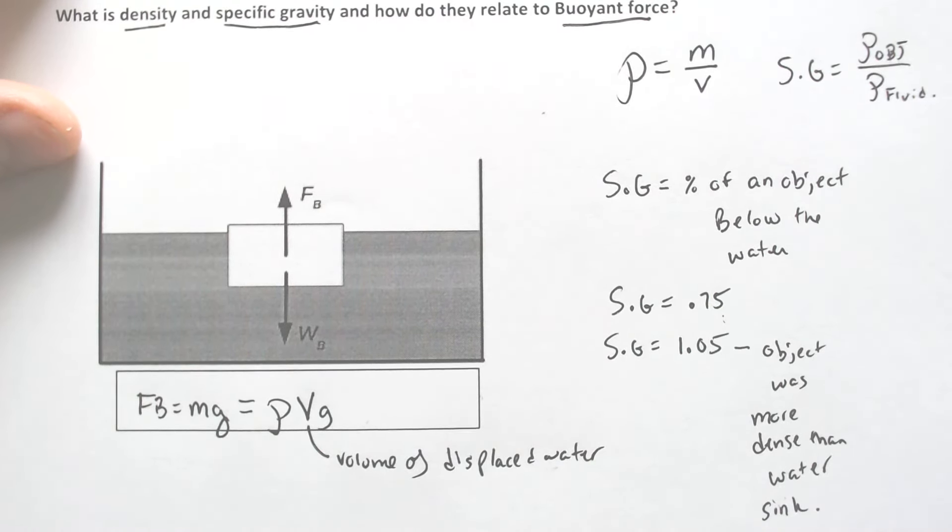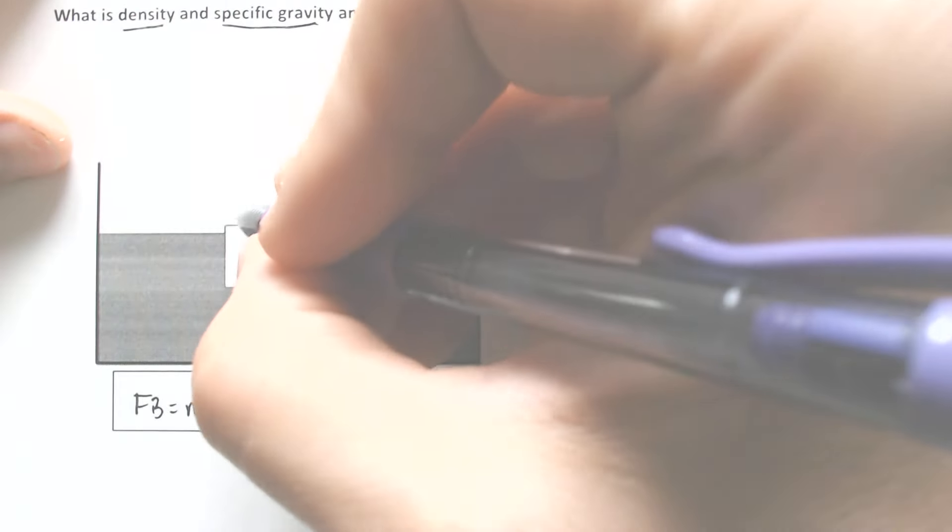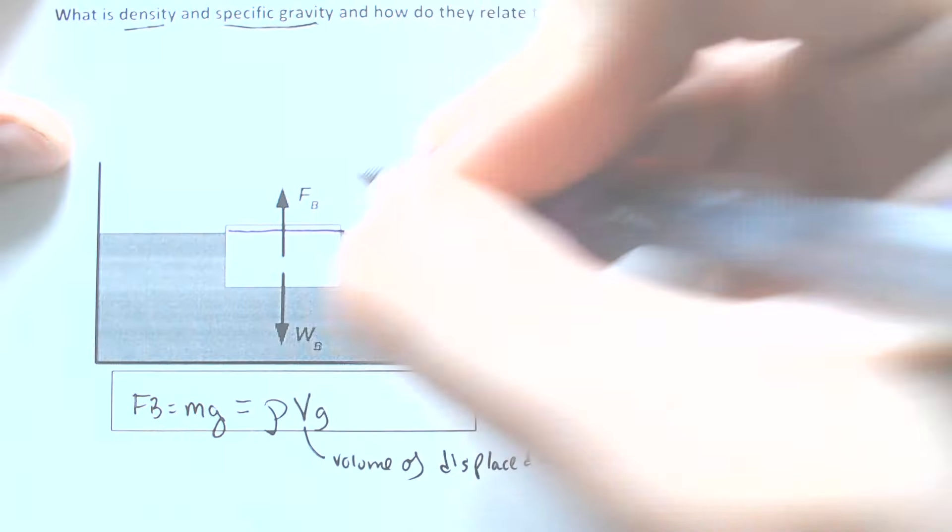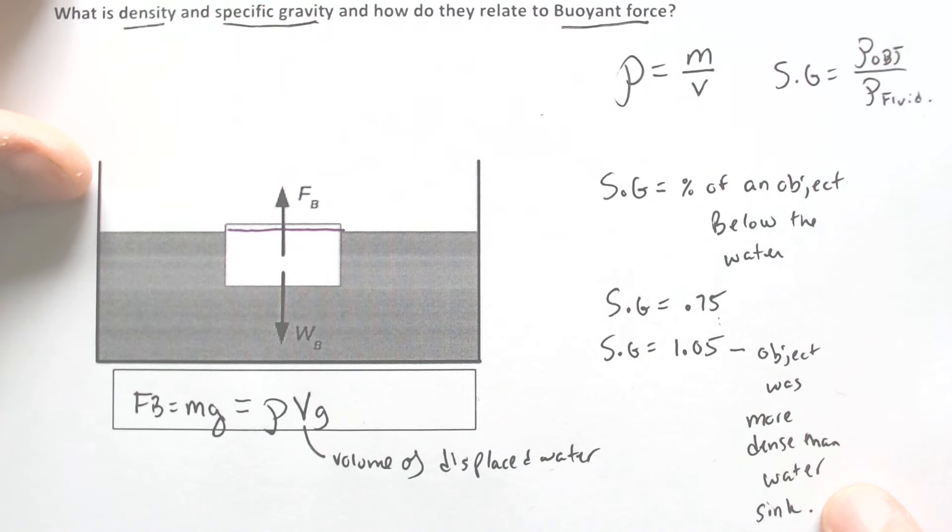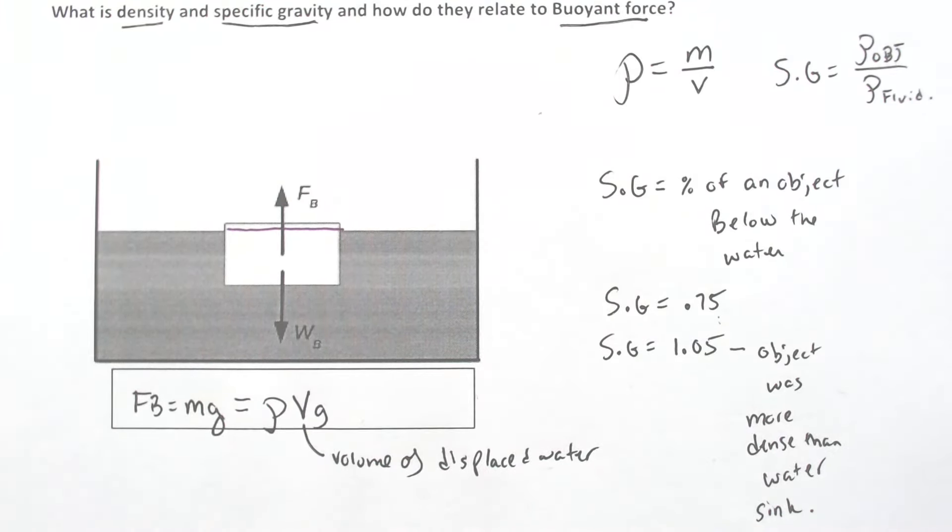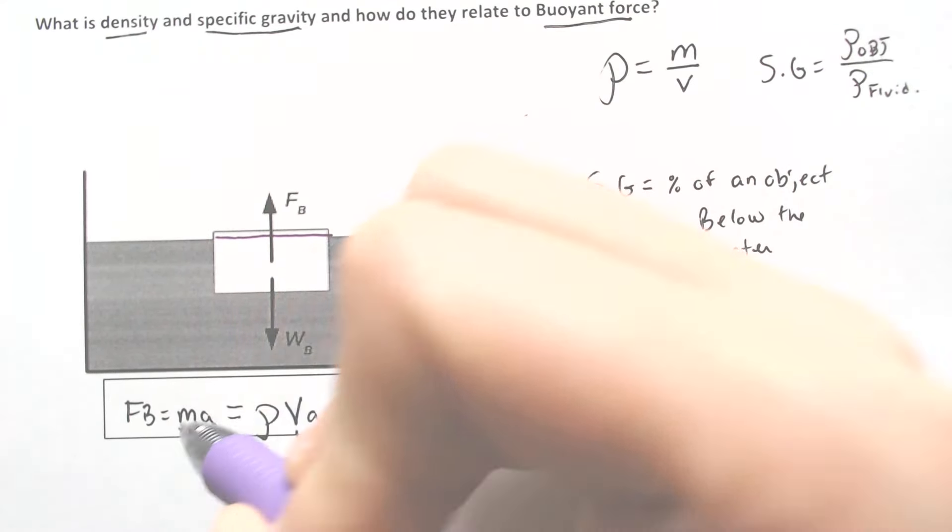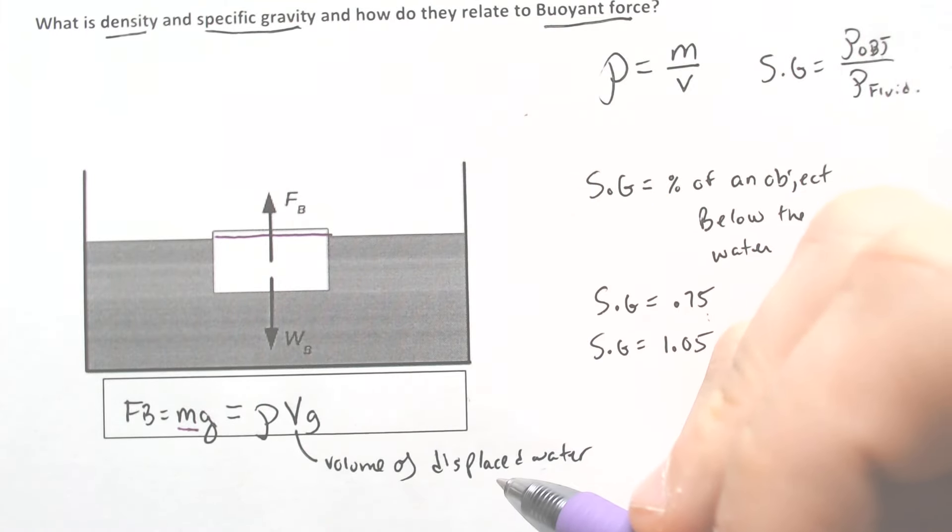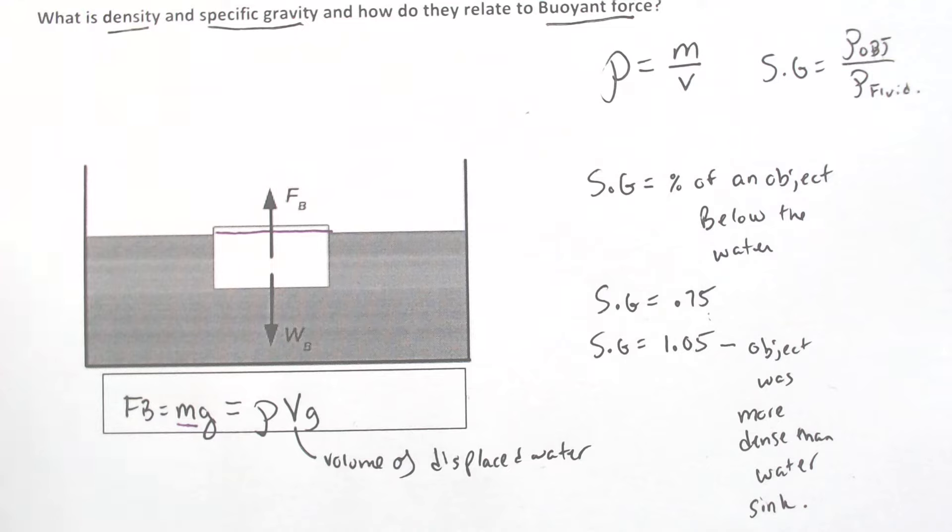So that volume of displaced water, when it is floating, is going to be equal to the percentage of the object that was underneath the water. Which means that you would know the volume that's underneath water. And therefore, you could relate it to the force of buoyancy because you could then maybe find the mass of the object. You could find the density of the object. There's all sorts of things you could do to manipulate this.